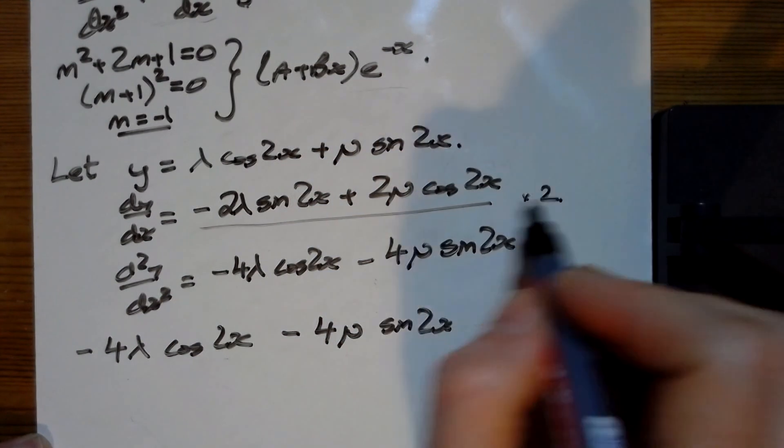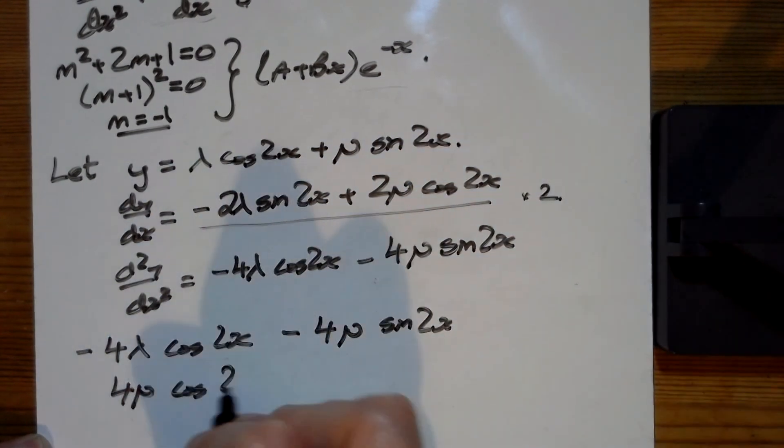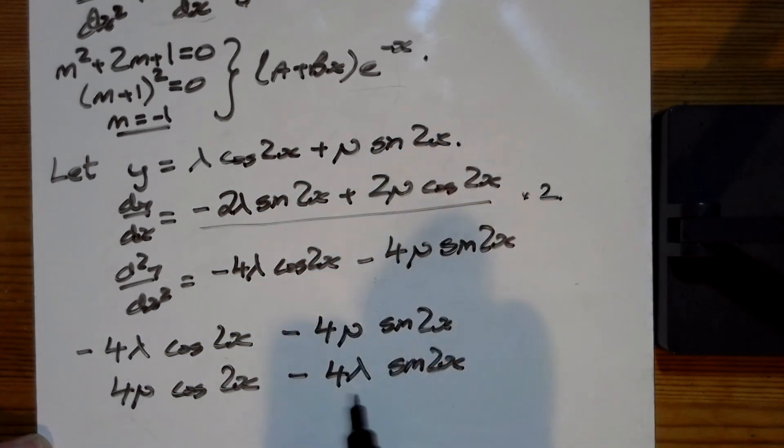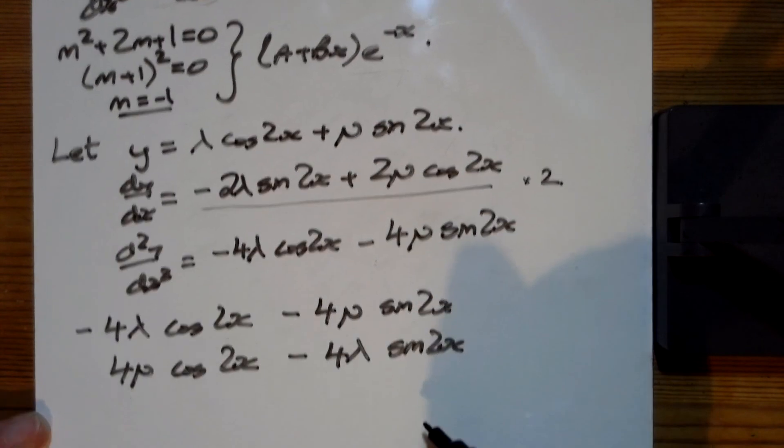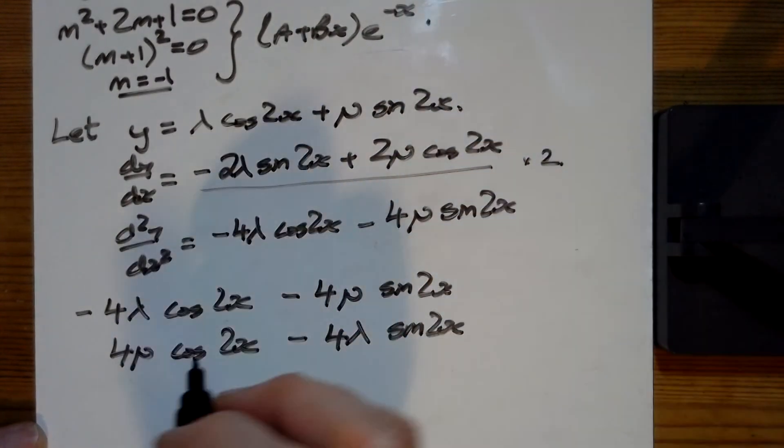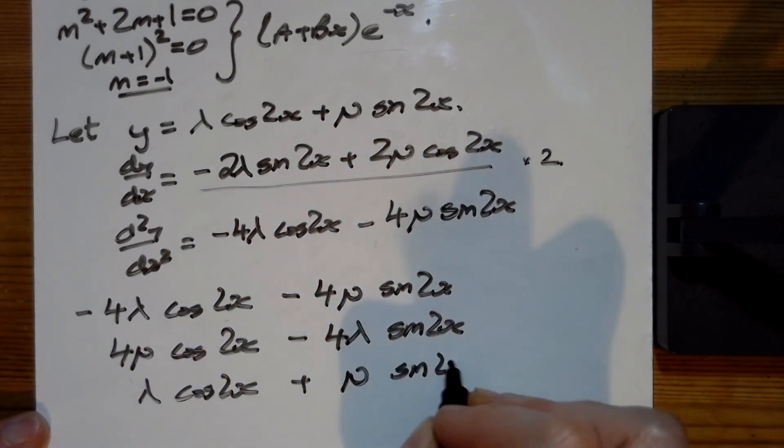I'm multiplying this by 2, so I've got 4λcos(2x) - 4λsin(2x). I just swapped them around because I wanted to line them up with the sines and cosines here. Then we've got just plus y, so we've got λcos(2x) + μsin(2x).